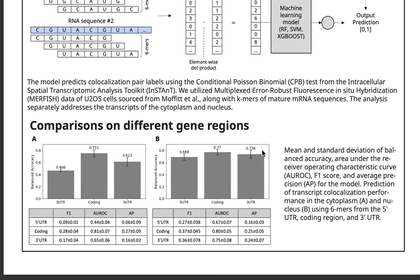Next, we evaluate our model's performance across different regions of the transcript. We separate the RNA sequence into 5' UTR, 3' UTR, and the coding region and compare the performance. The coding region shows the highest balanced accuracy among the three.